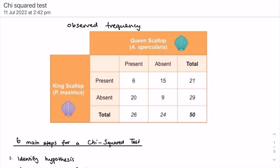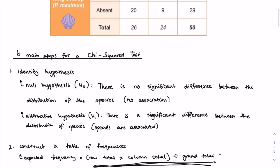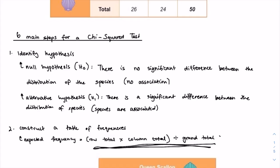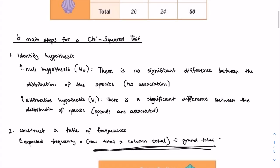The first step is to identify the two possible hypotheses. Firstly, there's the null hypothesis, which is when there is no significant difference between the distribution of the species, or there is no association between the two species. Secondly, there's the alternative hypothesis, which is when there is a significant difference between the distribution of the species, or that the species are associated.